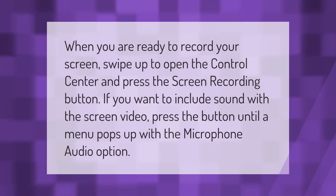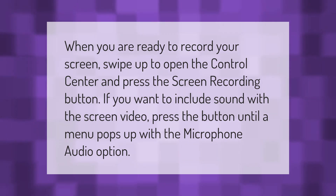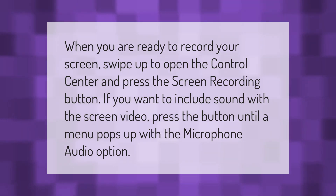When you are ready to record your screen, swipe up to open the Control Center and press the screen recording button. If you want to include sound with the screen video, press the button until a menu pops up with the microphone audio option.